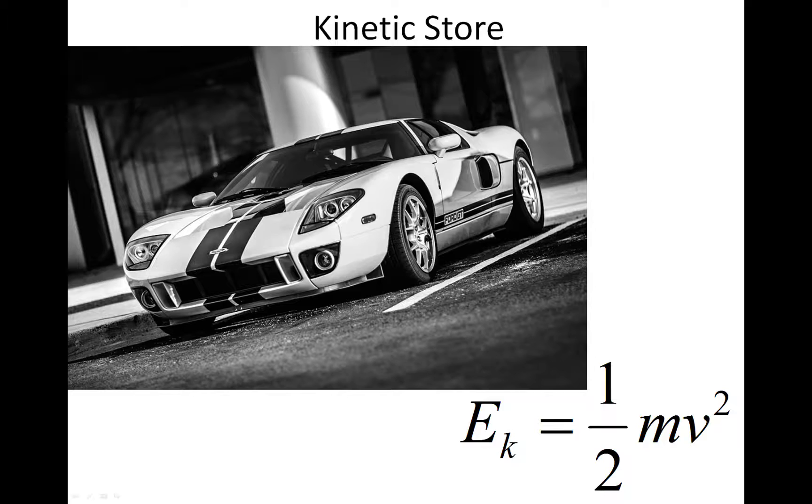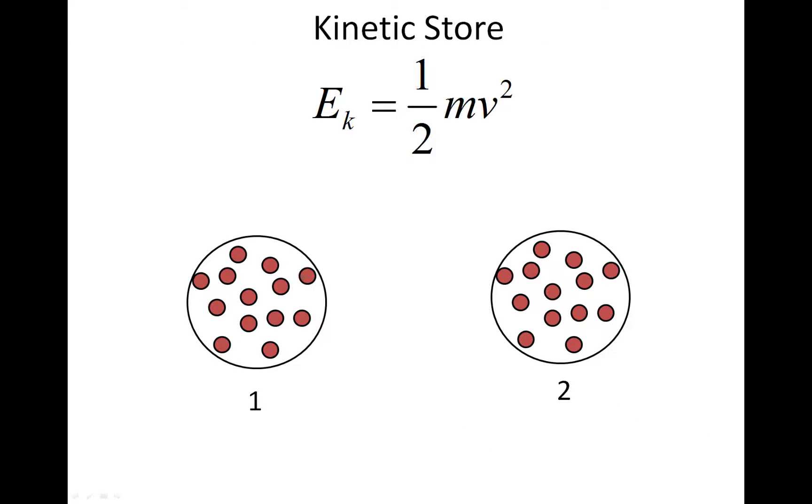Now let's look at what that dependence actually is. First of all, we'll look at the mass of the object. If we have two objects moving at the same speed, then the object with more mass will have more energy in its kinetic store. In this case, we have mass one